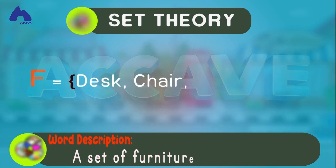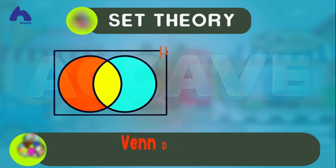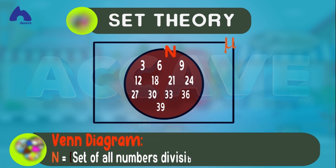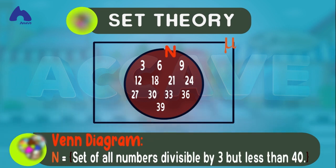It can be described by diagrams, which is called a Venn diagram. For example, this diagram is a set of numbers divisible by 3 that are less than 40.